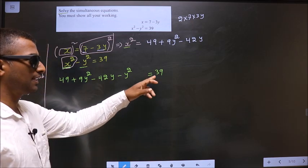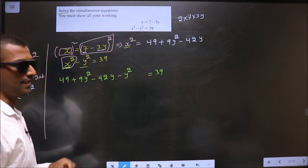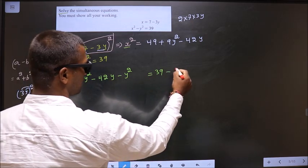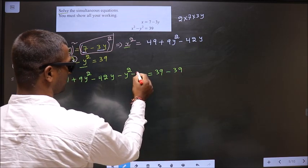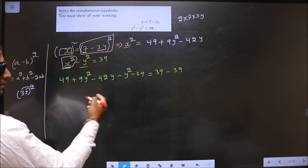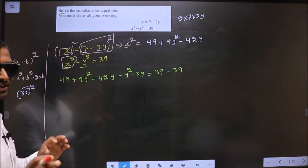Now, this 39 should be removed from this side. So, for that subtract 39 on both sides. And here, simplify the like terms.